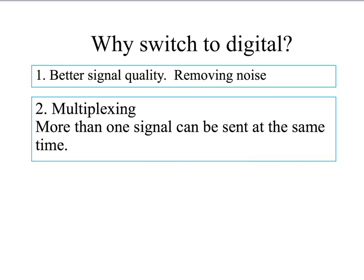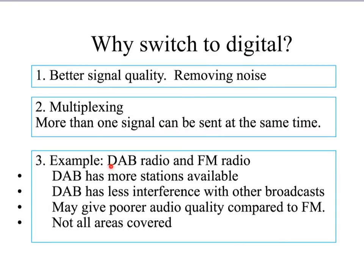Another reason for switching to digital is multiplexing, which means that more than one signal can be sent at the same time. It's much easier to do this with digital than with analogue. An example is a comparison of DAB radio — digital audio broadcasting — and FM radio, which is analogue. DAB has more stations available and less interference with other broadcasts. It may give poorer audio quality compared to FM in cases of heavy interference where a digital signal could cut out. A disadvantage at the moment is that not all areas are covered, so you can't receive all stations in digital format everywhere in the country.